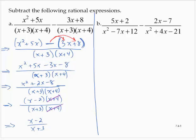The second exercise is a little bit tougher, because we have to find the LCD for these rational expressions. The first denominator factors as x minus 3 times x minus 4, and the second denominator factors as x minus 3 times x plus 7. So the LCD would be x minus 3 times x minus 4 times x plus 7.